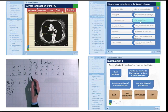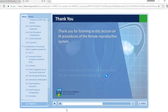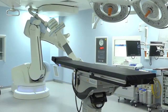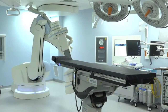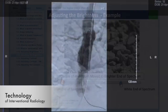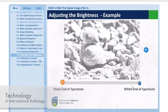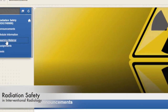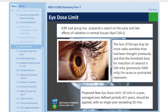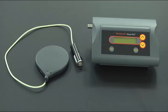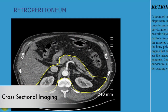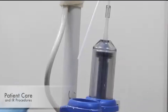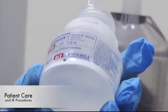Learning is interactive and engaging, with access to your lecturer throughout the course. The course comprises four core modules: Technology of Interventional Radiology, Radiation Safety, Cross-sectional Imaging, and Patient Care and Interventional Procedures.